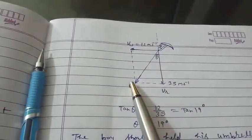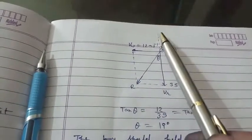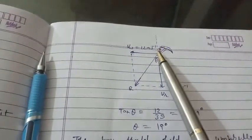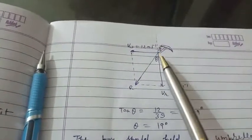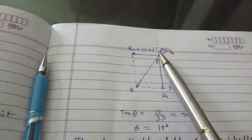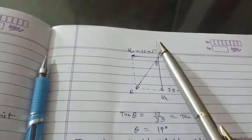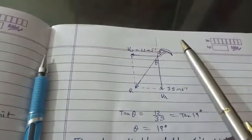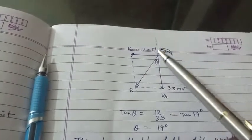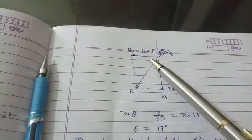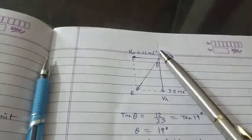The resultant represents that the vertical rain drops are not vertical. Hence, he should hold his umbrella at an angle theta with vertical.